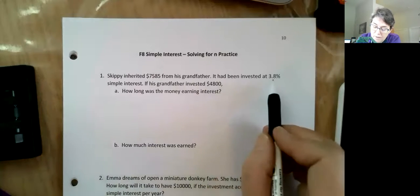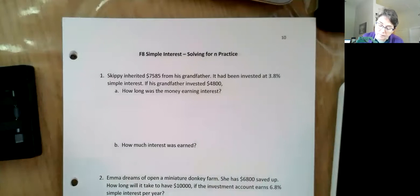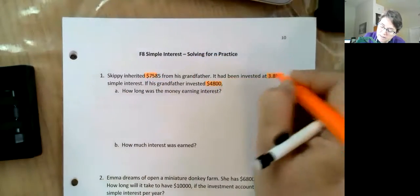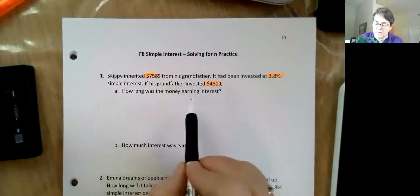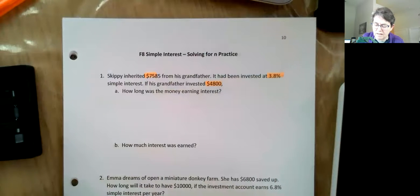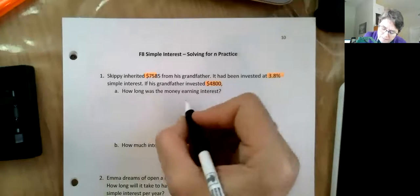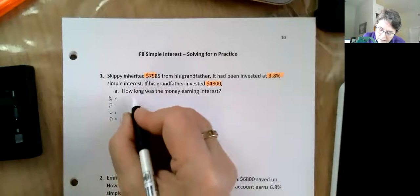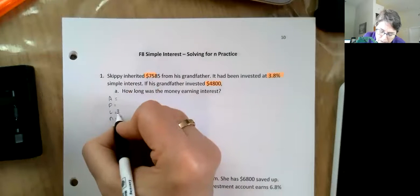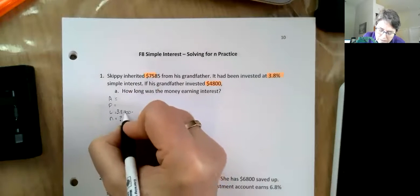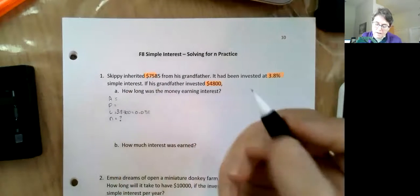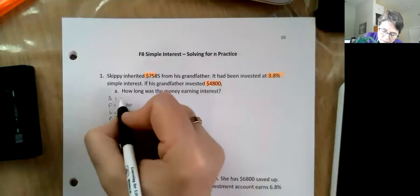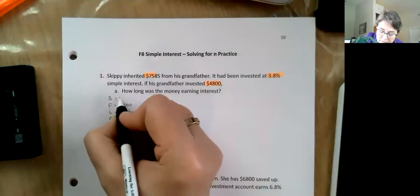Skippy inherited money from his grandpa invested at 3.8%. I know what's going on with this question. I was trying to see how many different ways can I ask the same question. So this is money you got from grandpa. This is what grandpa invested. And there's the percent. How long was the money earning interest? Okay, that's just grammar numerically. English-wise sounds a little bit weird but I think it's okay. So A, P, I, N.